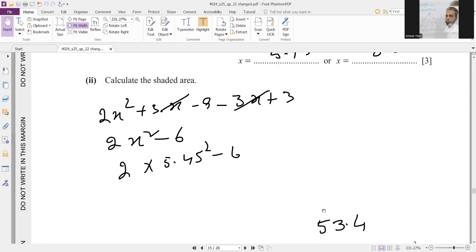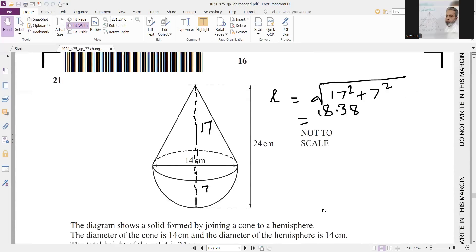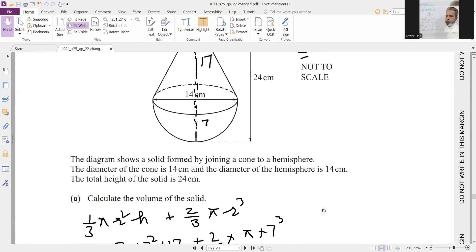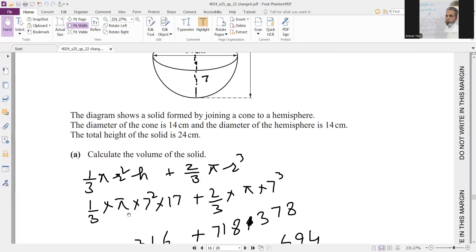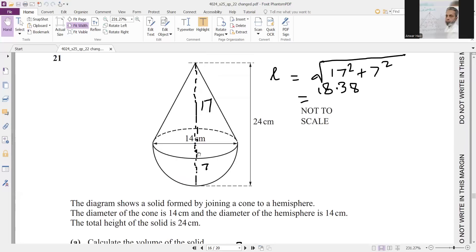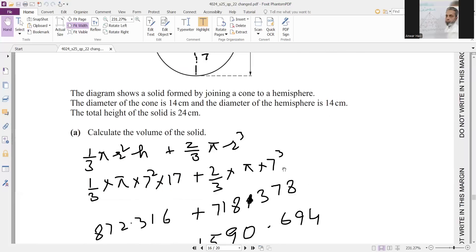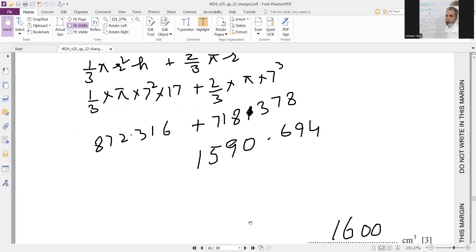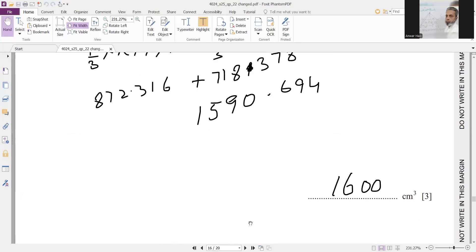This is 1 over 3 pi r square h plus 2 over 3 pi r cube. This is hemisphere. This is 4 over 3 pi r cube. So using the values and then use the calculator. Already I have worked over the diagram. You can see the radius is 7 and total is 24. The 17 plus 7 is 24. So the height of the cone will be 17. You will get the volume of the solid, 1590.694 or 1600 after two significant figures.